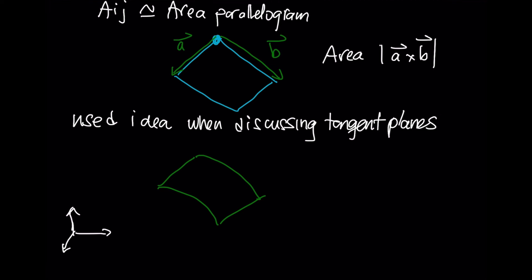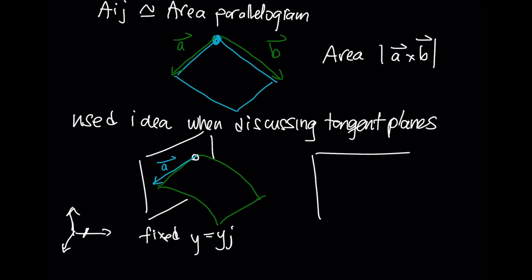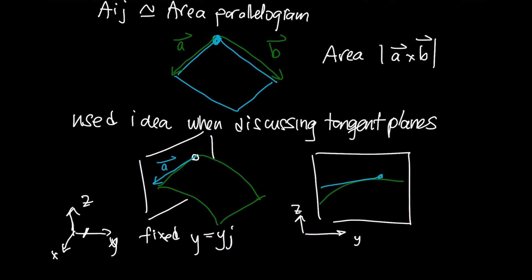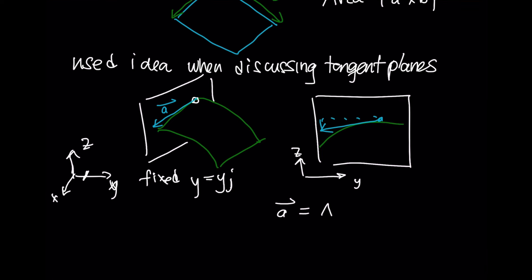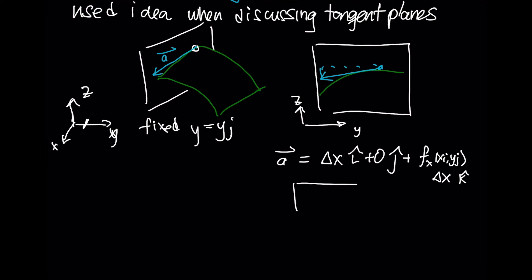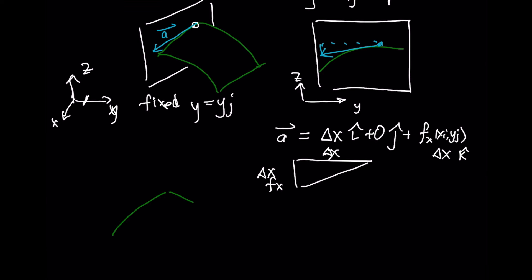If we took our patch of surface area and intersected it with coordinate planes, we can find what these vectors are. Our axes are oriented with a fixed coordinate plane at y equals yj. Vector a will have a length of delta x in the i direction — to match the subdivision rectangle rij — no contribution in the y direction, and in the k direction the slope is given by the x partial derivative fx evaluated at xi, yj, scaled by the same delta x.